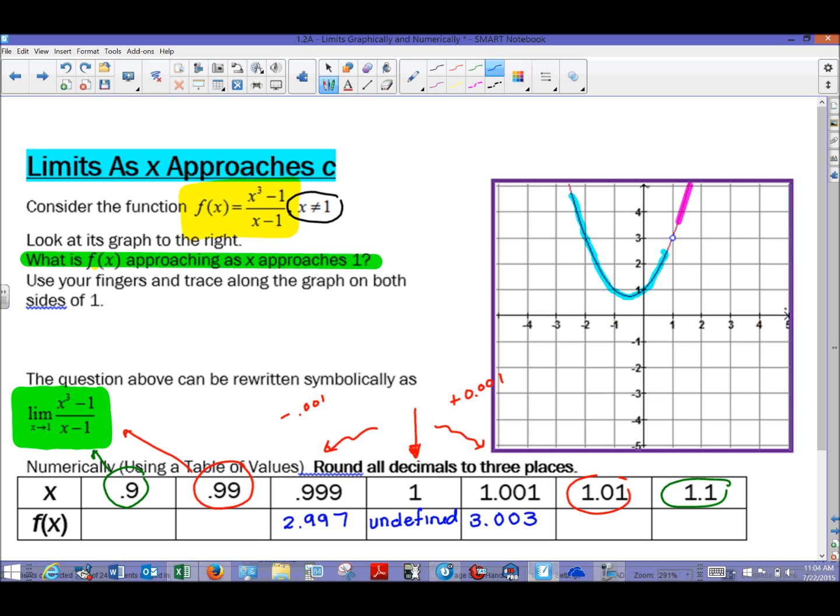So the simple fact that these two numbers here are very, very close to 3 leads us to believe that the answer to this limit most likely is 3. And it is.